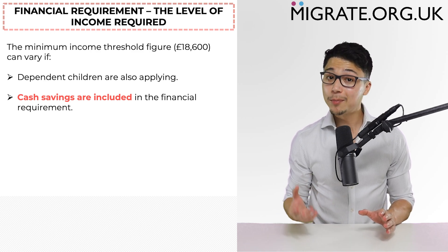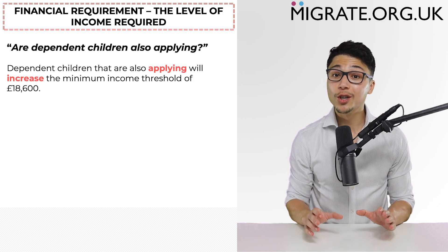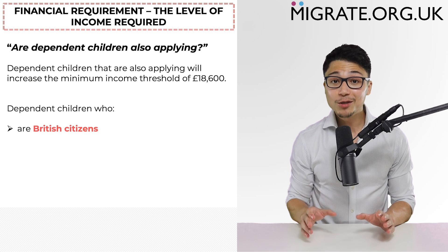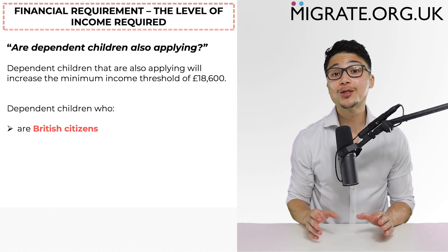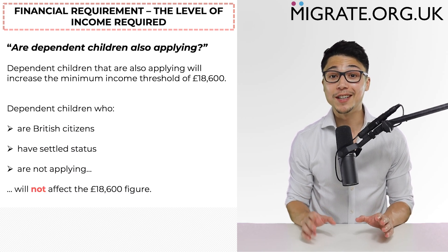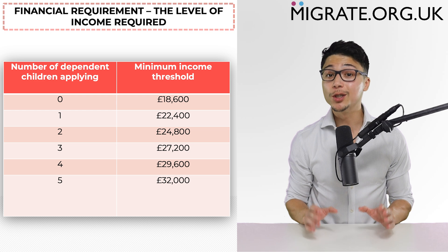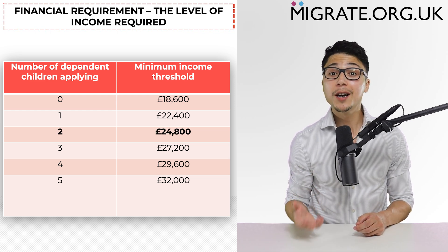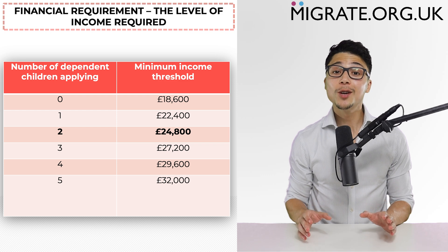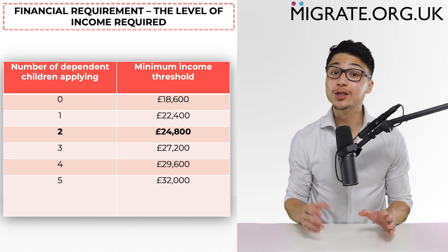Let's first discuss dependent children and their impact on the minimum income threshold of £18,600. If there is a dependent child or dependent children who are also applying, the minimum income threshold of £18,600 will be increased. I stress the word 'applying' because dependent children who are British citizens, have settled status, or are not applying will not affect the minimum income threshold. This table shows the minimum income threshold based on the number of dependent children applying. For example, if you apply with two dependent children, the threshold changes from £18,600 to £24,800.